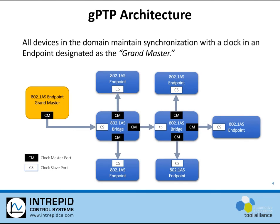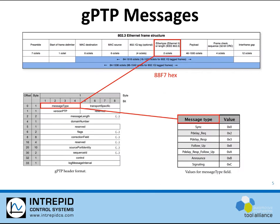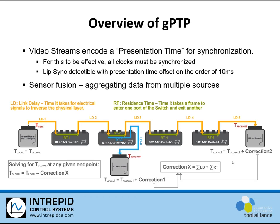Specialized GPTP messages are transmitted from the grandmaster to all connected switches and finally arriving at all endpoints. These specialized messages are all transmitted on a very specific EtherType designed for GPTP: 88F7 hex. The different message types are shown in this table. Link delays and residence times are calculated uniquely for every link and every switch on the network, and when each endpoint receives its GPTP message with this information, it can accurately calculate the grandmaster clock value when the data is received. Each endpoint node can use this grandmaster clock value to coordinate activities with all other nodes on the network in a time-synchronized manner.